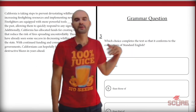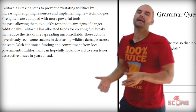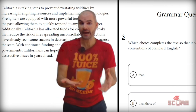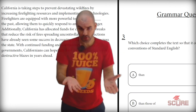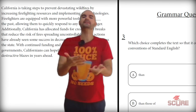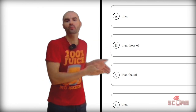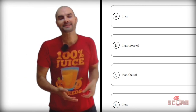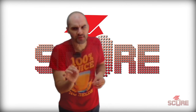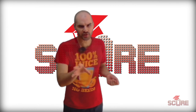Third grammar question: the blank says 'firefighters are equipped with more powerful tools, blank the past.' When doing comparisons, make sure the two things on each side of 'than' are the same kind of thing. 'Tools' and 'the past' are two different things — one is tools, one is time. So we need something in between to represent the concept of 'tool.' Since 'tools' is a plural word, I need a plural pronoun in the middle. Option B works perfectly: 'than those of the past' — meaning the tools of the past. A lot of times this kind of comparison question appears on the SAT and is a great way to trick people.